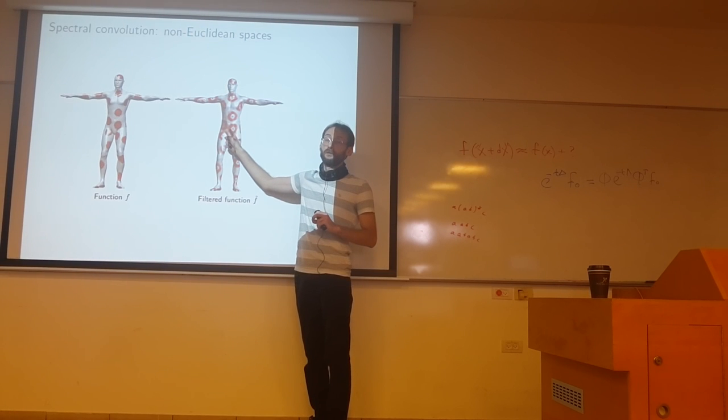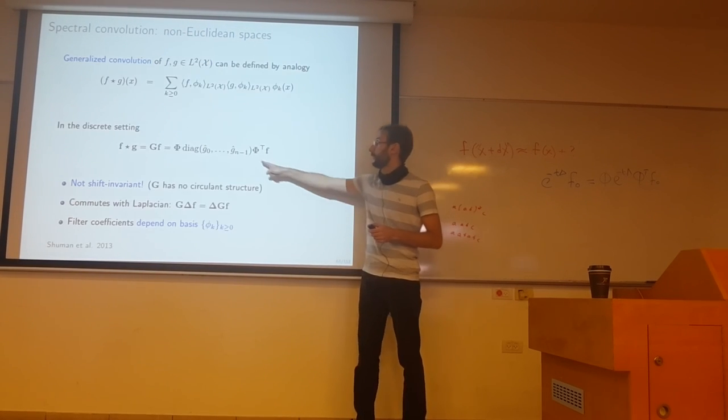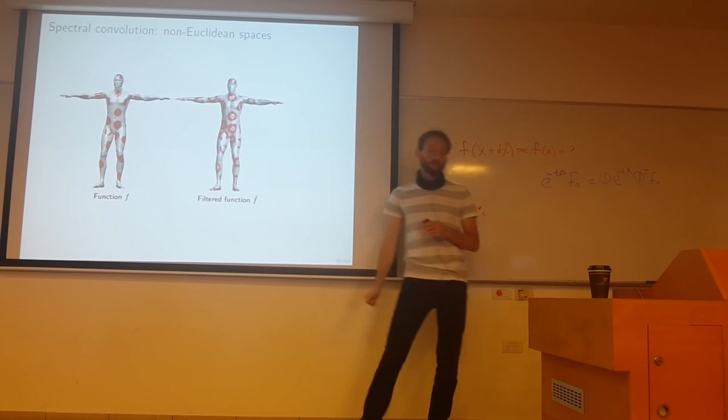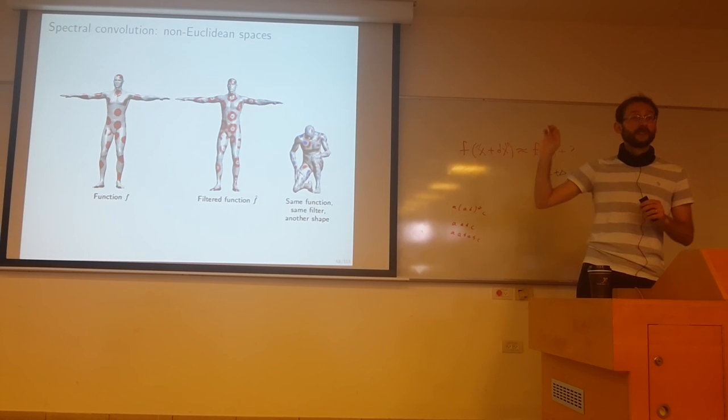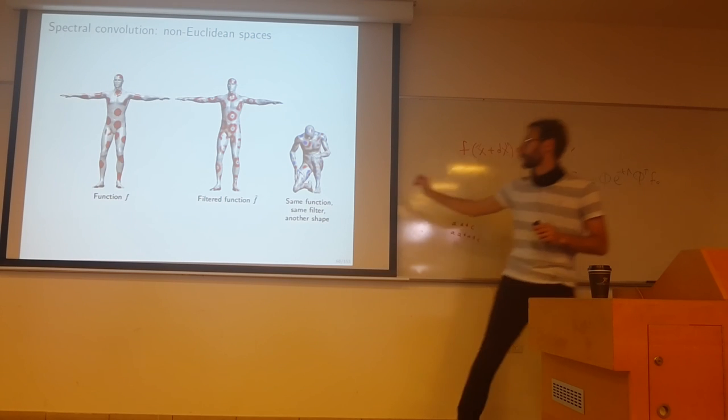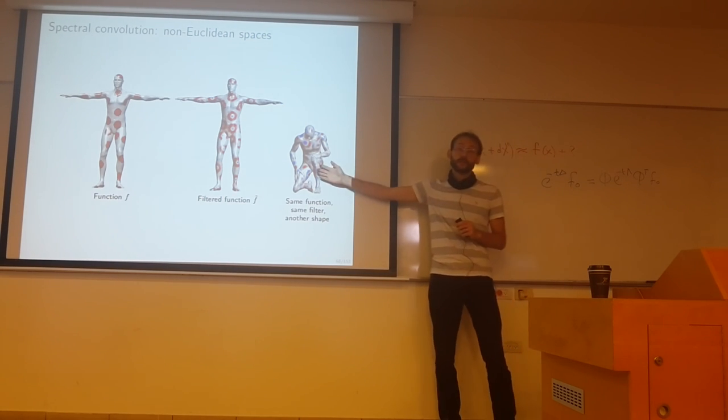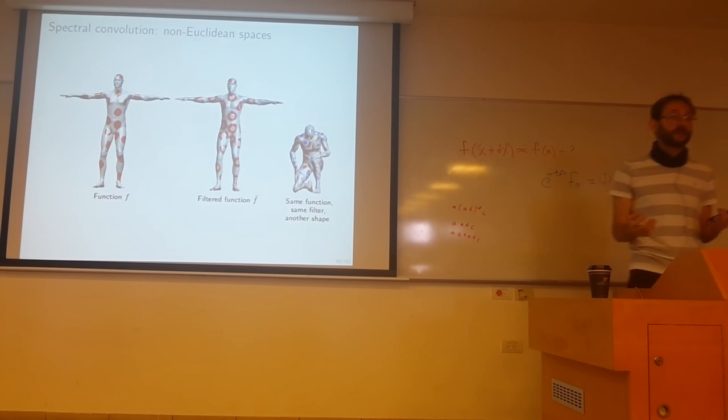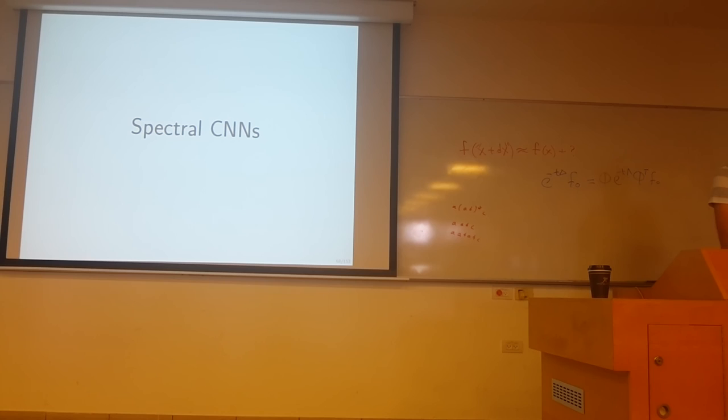Let me give you an example. This is a function that I plot on the manifold. This is a filter that is applied to this function represented in this way. It does some kind of edge detection. Now I take an approximately isometric domain with the same function, apply the same filter, and I get a completely different result. Why? Because the basis here changed. The eigenbasis of the Laplacian is different. I use the same filter coefficients to apply to this function. I get a very different result. You see a problem of transferring the filter from one domain to another. This will be a major problem of spectral convolutional neural network techniques. I need a 15 minutes break.